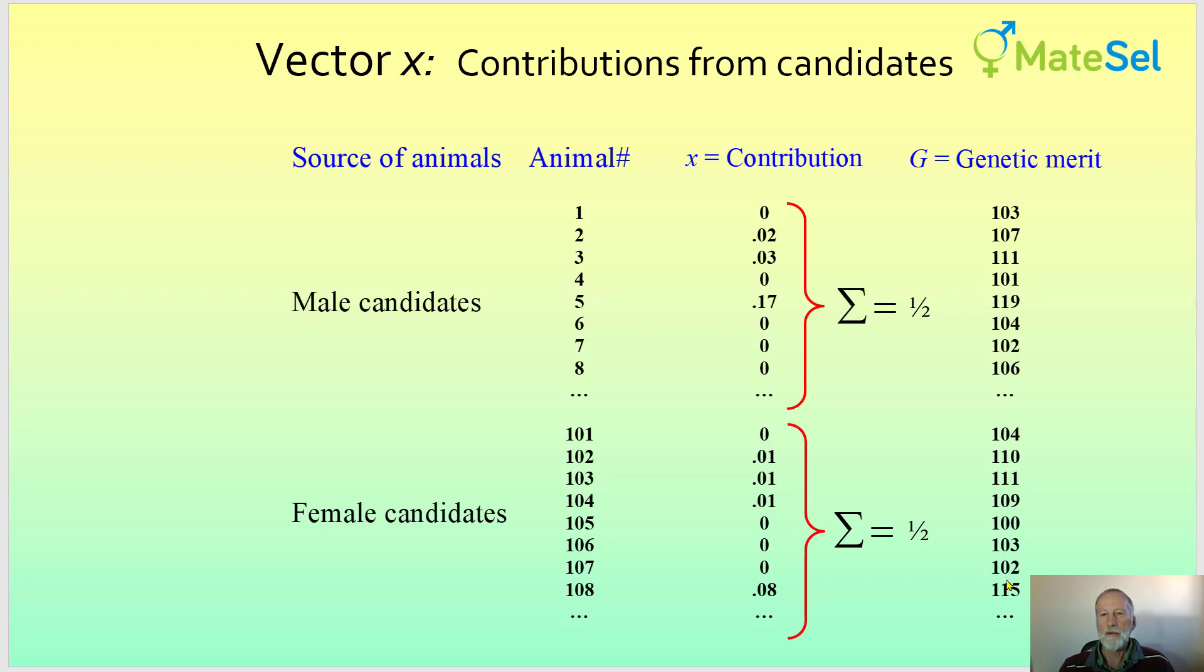And to get a prediction of the average genetic merit in the progeny, all we have to do is multiply each of these contributions by the genetic merits and add them up, which is the same as multiplying vector x with vector G.